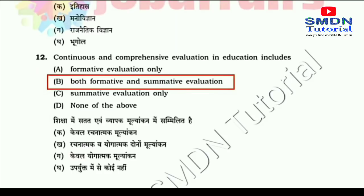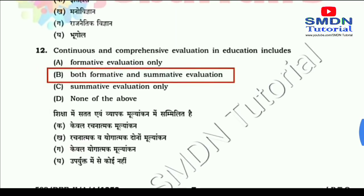CCE — Continuous and Comprehensive Evaluation — includes both formative and summative assessment. Formative assessment 1 is in February, formative assessment 2 in August, formative assessment 3 in December, and Summative Assessment 2 in November. The answer is B: both formative and summative evaluation.